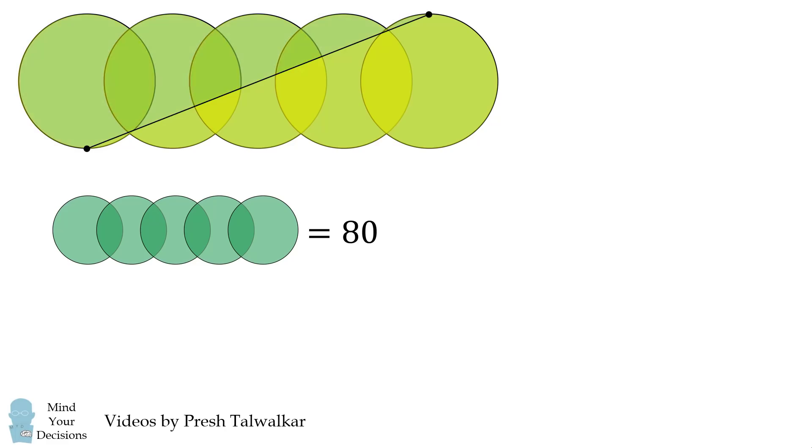This total area is also equal to 5 times the area of a single circle minus 4 times the area of the overlap between two circles. Recalling the overlapping region has an area equal to 5, we can substitute in.